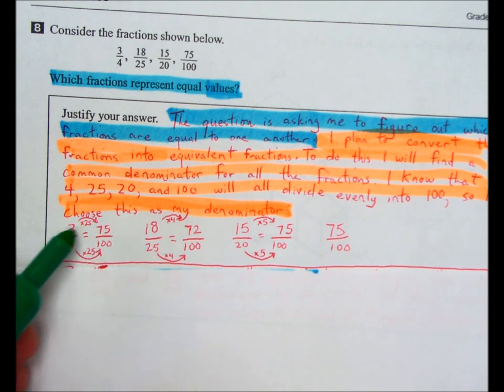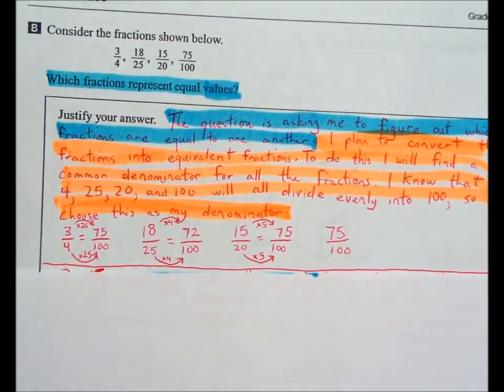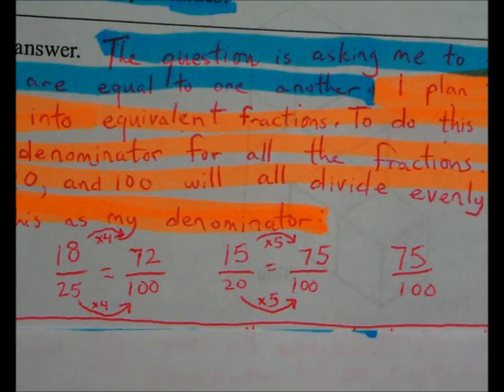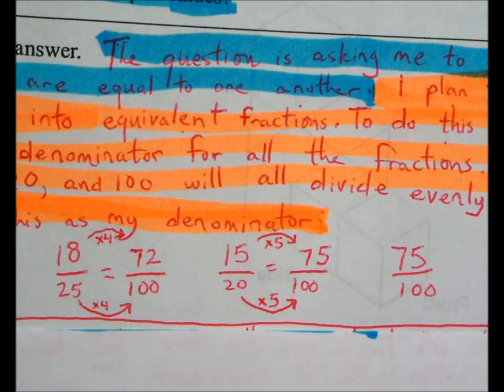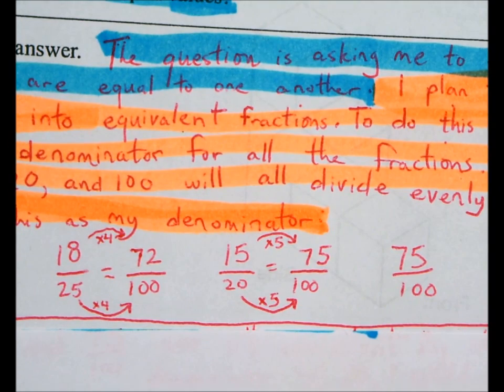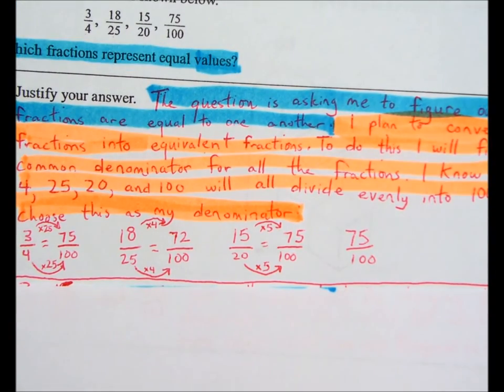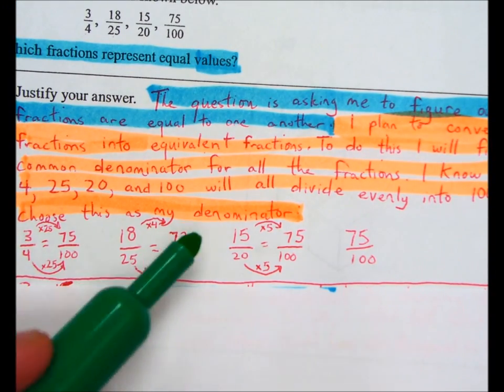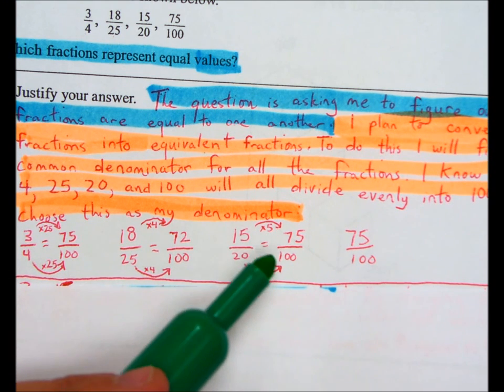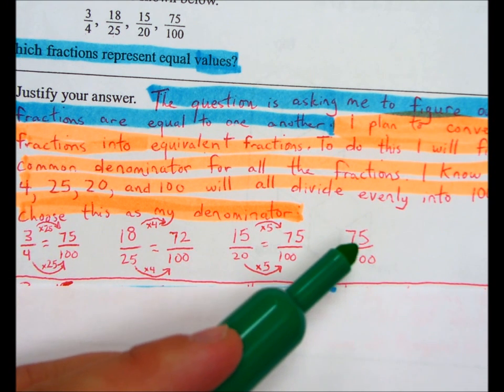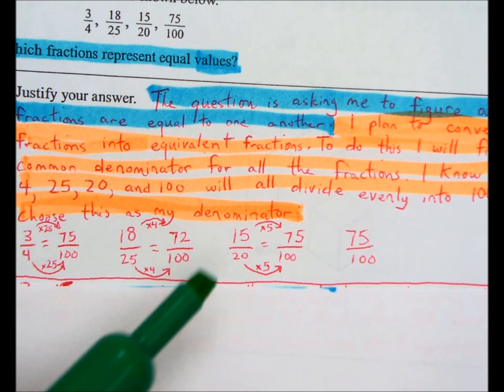If you zoom in a little bit here, you can see exactly what I multiplied each numerator and denominator by to get the equivalent fraction. And I notice that three-quarters equals 75 over 100. 15-20ths equals 75 over 100. And of course, 75 over 100 already equals 75 over 100.